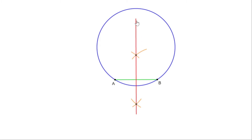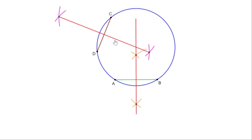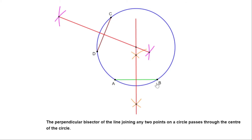But where exactly is the center? There are many points on this line — how can we identify the center? For that, let us mark another two points C and D on the circle. The center of the circle lies on the perpendicular bisector of the line joining these two points. So let us join C and D — the center lies on the perpendicular bisector of CD also. Let us draw the perpendicular bisector of CD. The center lies on both perpendicular bisectors, so the intersecting point is the center, because this point lies on both perpendicular bisector lines. We have seen that the perpendicular bisector of the line joining any two points on a circle passes through the center of the circle.